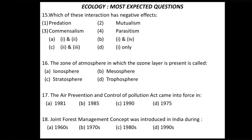Question 15: which of these interactions has a negative effect? Four interactions are provided: predation, mutualism, commensalism, and parasitism. The correct option is B — predation and parasitism (options 1 and 4) show negative effects.